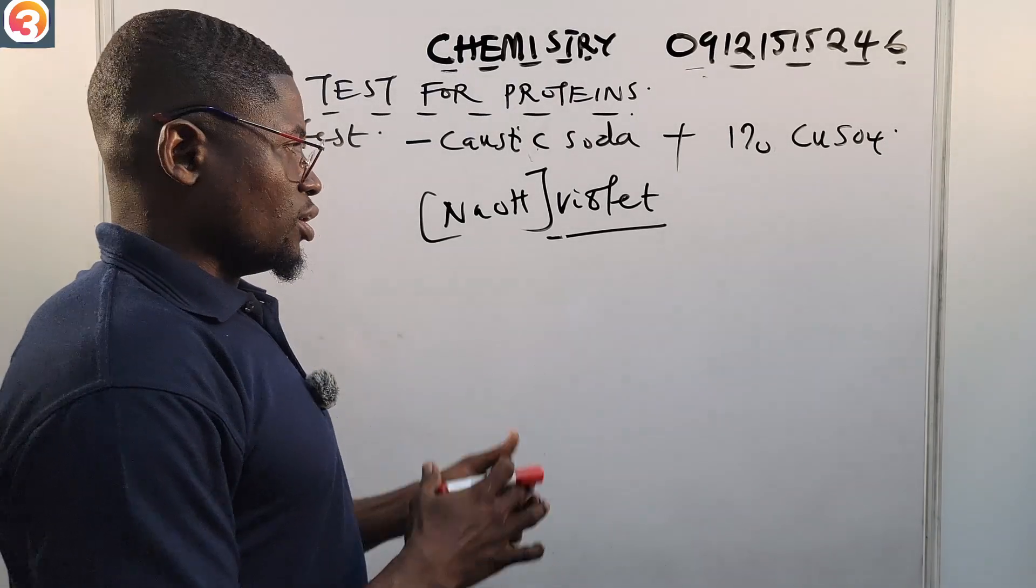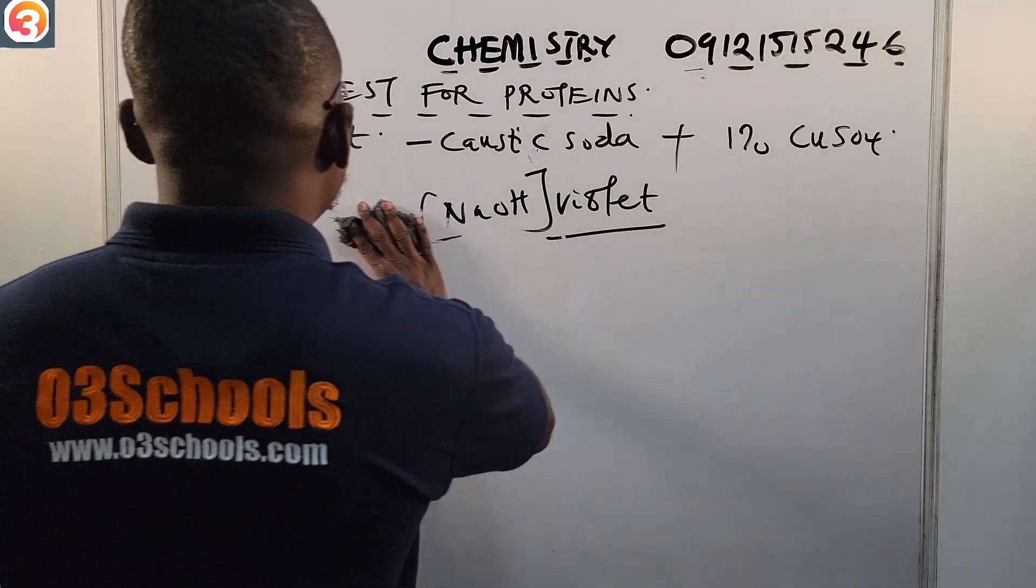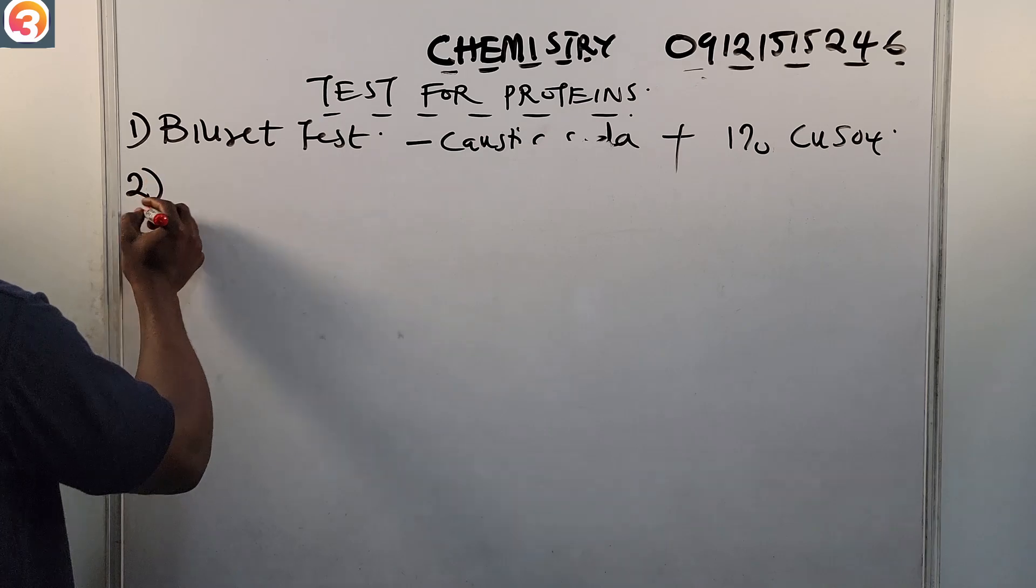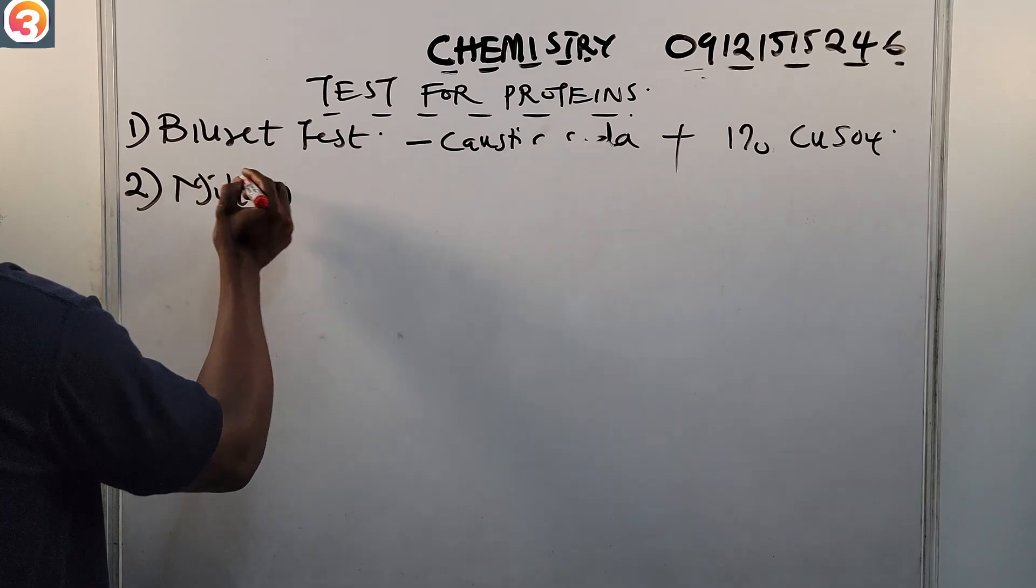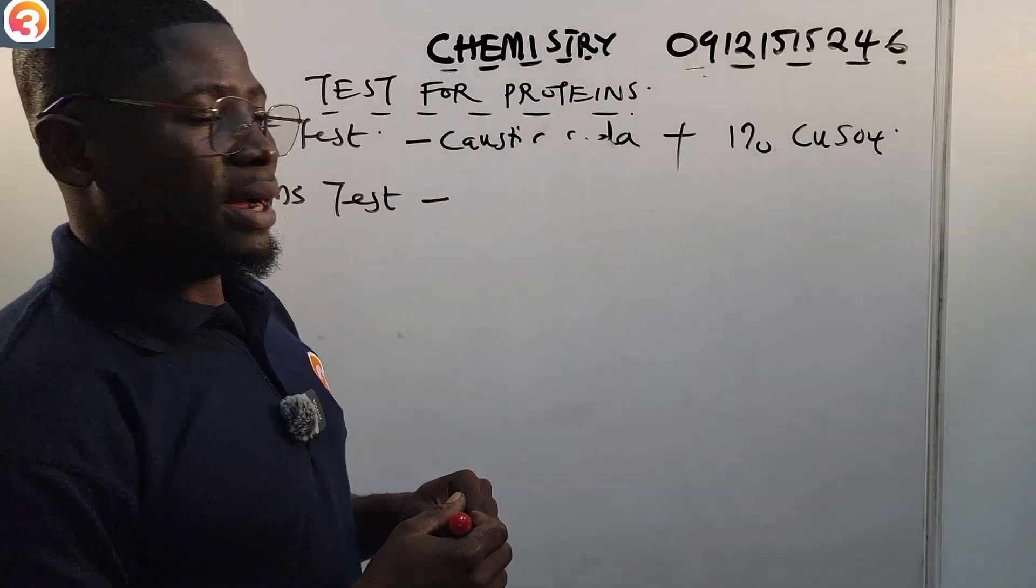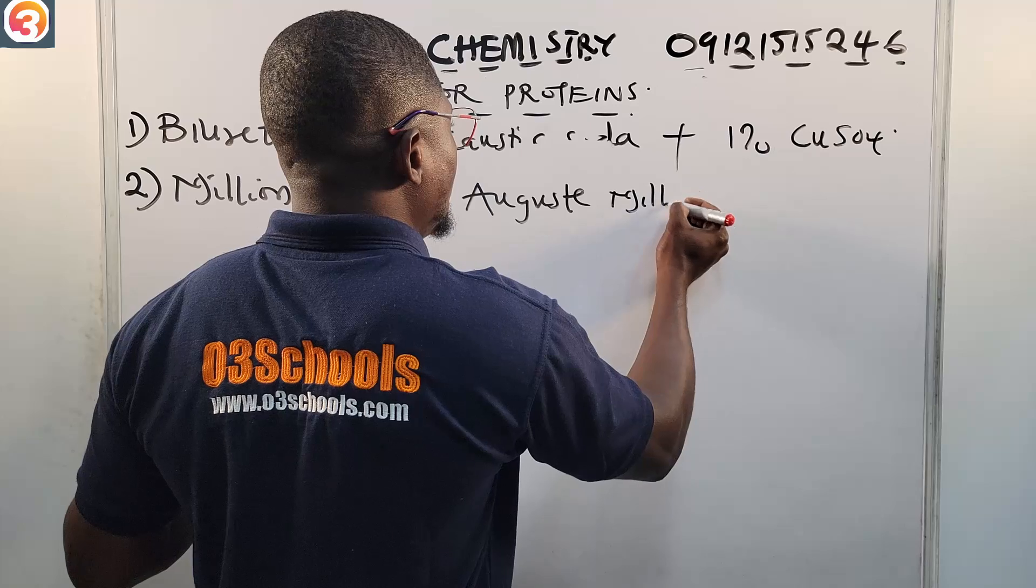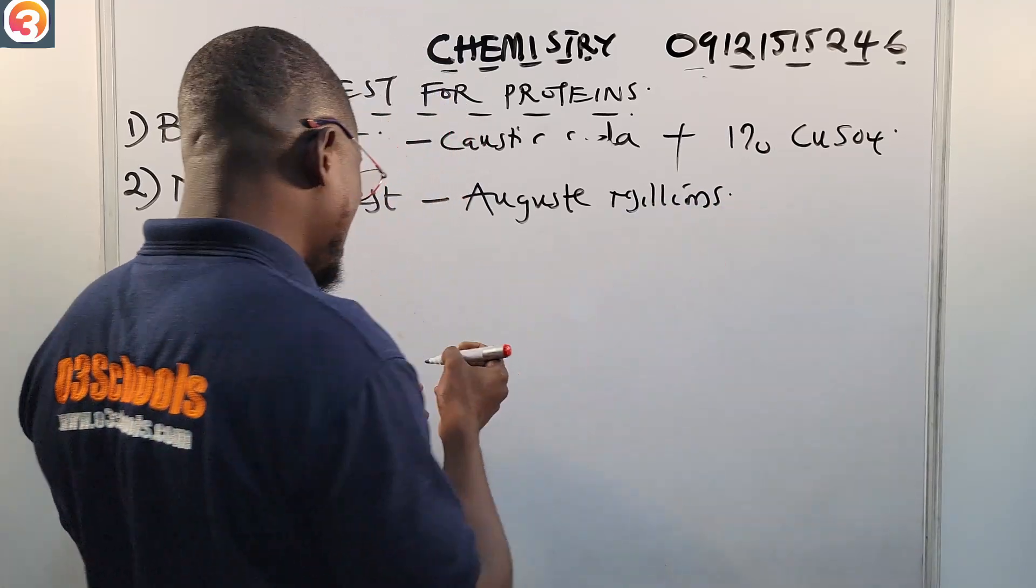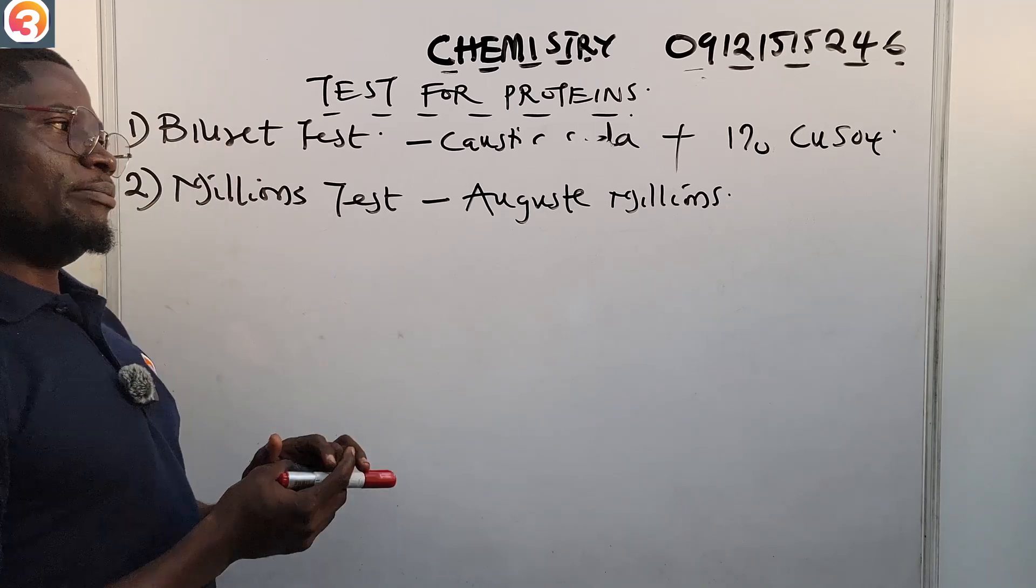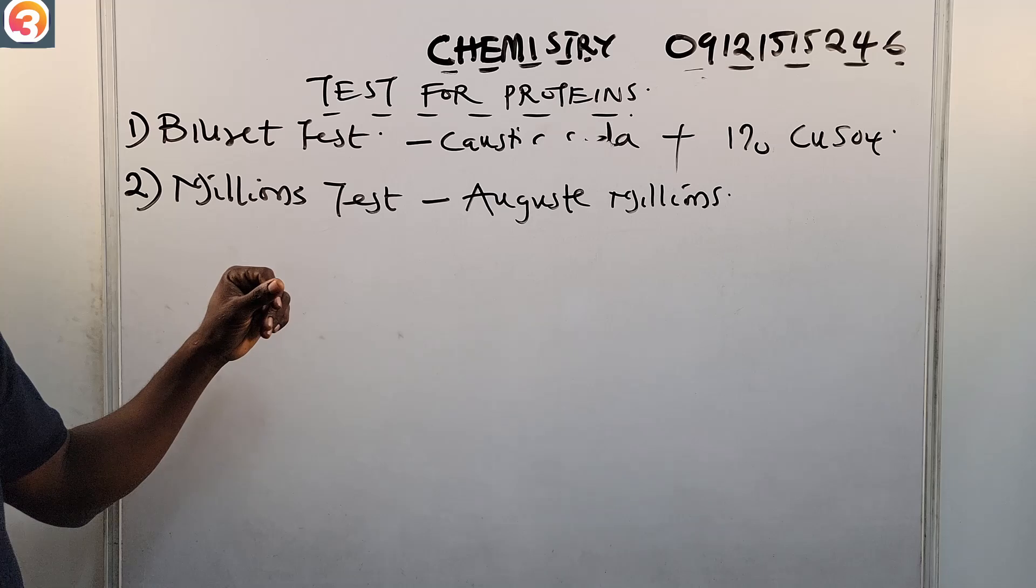So caustic soda plus 1% copper sulfate, you observe a violet color which is a positive result for the test. Now number two, the second test we'll use is Millon's test. This one was proposed by August Millon. Probably the parents saw that he will have a lot of millions in his lifetime.